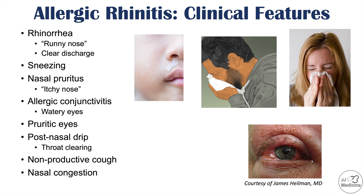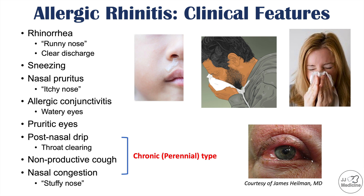Nasal congestion — a stuffy nose — is also a noted clinical feature. Postnasal drip, nonproductive cough, and nasal congestion are more likely to be seen in the chronic or perennial type of allergic rhinitis, as these represent the consequences of prolonged exposure rather than the acute early-phase symptoms like rhinorrhea and sneezing.